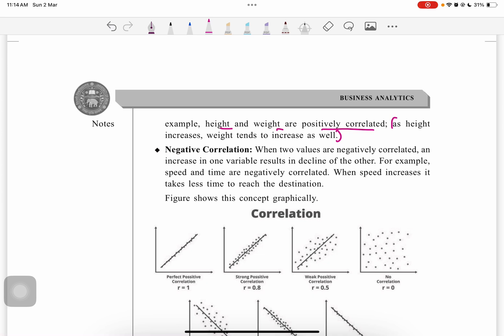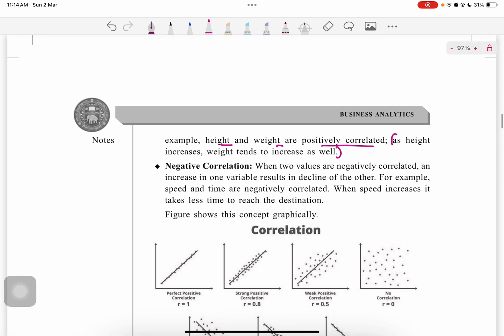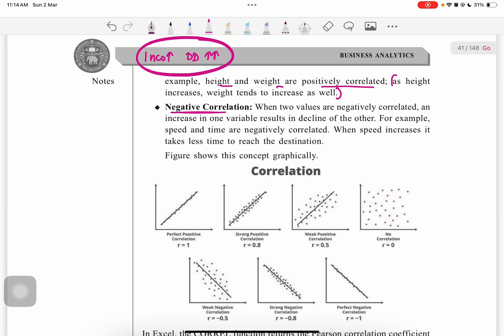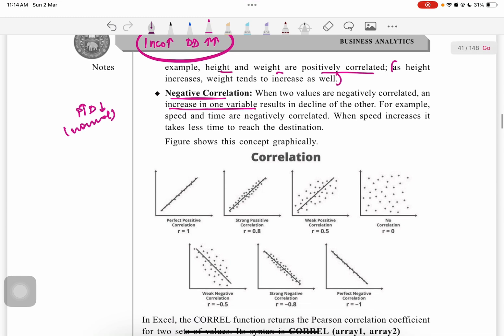If I take the example of demand and income, if the income of the person increases, the demand or consumption of the person will also tend to increase. This is positive correlation. Negative correlation, as I talked about with price and demand—if the price goes up, the demand will go down in normal circumstances of normal goods. When two values are negatively correlated, an increase in one variable results in the decline of the other.